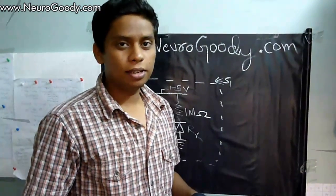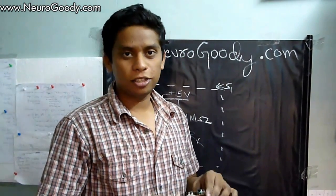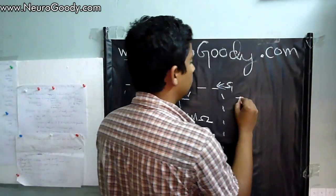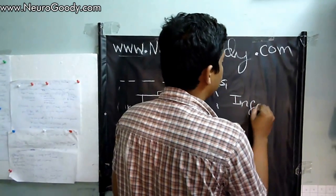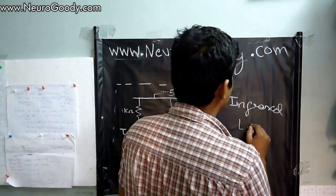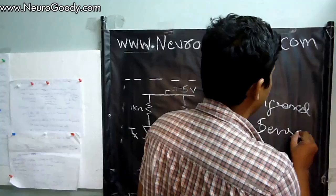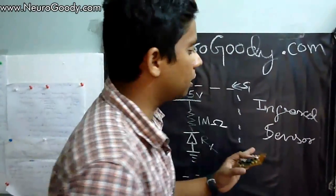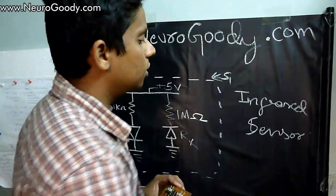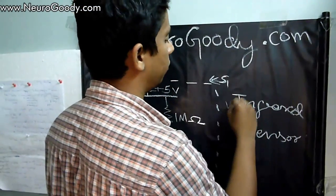Hi there, today we are going to study about infrared line sensors. Infrared line sensors are used for many purposes in robotics. Today we are going to use this in our line follower robot.